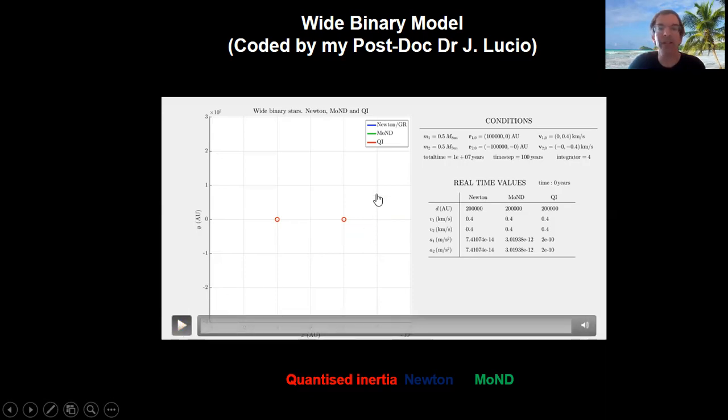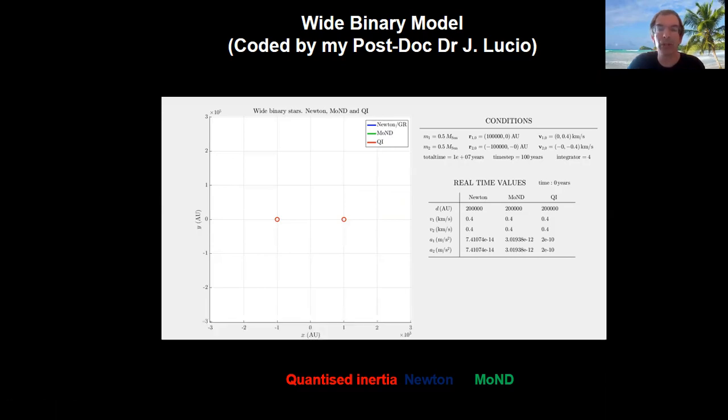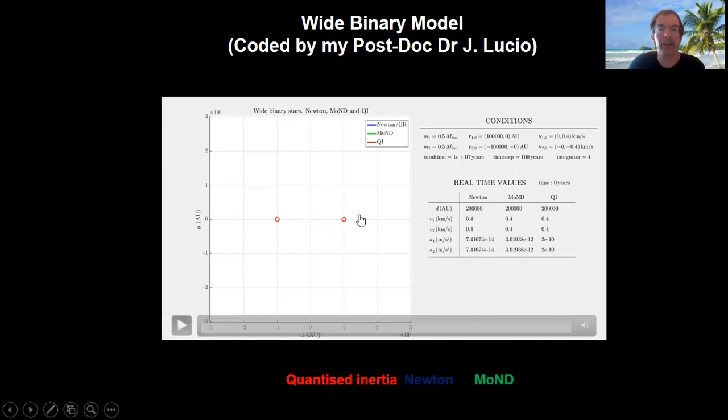So we'll see what happens. And what you'll see is that Newton and MOND, in these two physical models, the stars will separate because their mutual gravity will not be strong enough to hold them. But with quantized inertia, their inertial mass will reduce because the acceleration is very low, because they're very far apart. And so the centrifugal force pushing them apart will not be strong enough to push them apart. So they will stay together.